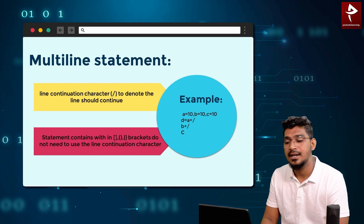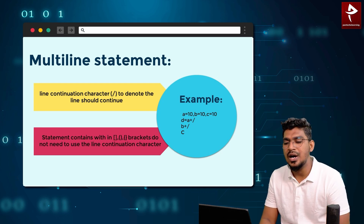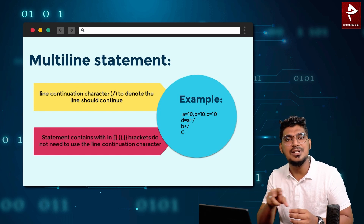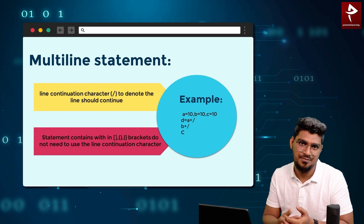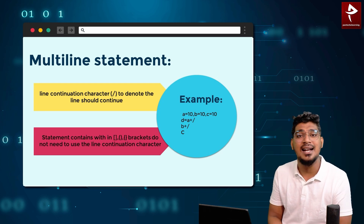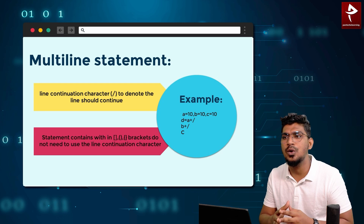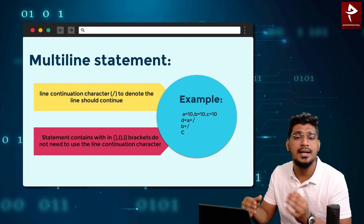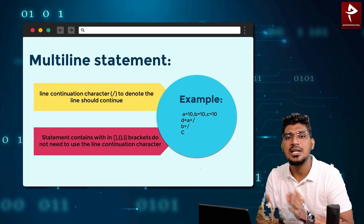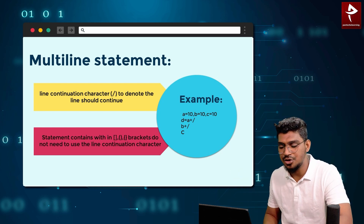For example, A equals 10, B equals 10, C equals 10, and D equals A plus B plus C. If you are writing this as a long horizontal line, you can't read the code easily. By using the backslash and then pressing enter, you can write it across multiple lines. You can also use open bracket, close bracket, square bracket, and set bracket for line continuation. That is the main purpose of multiline statements.